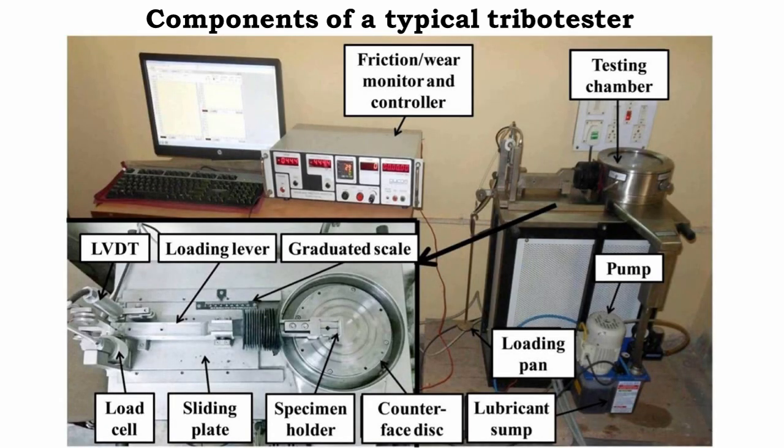Now, the components of a typical tribo tester — these are the components. As we can see, this is the main component of the tribo tester, where this is the main chamber. Inside this chamber, there is the pin and the disc, and this chamber is closed for the purpose of creating a controlled environment.